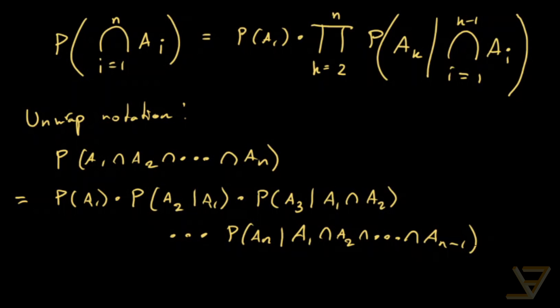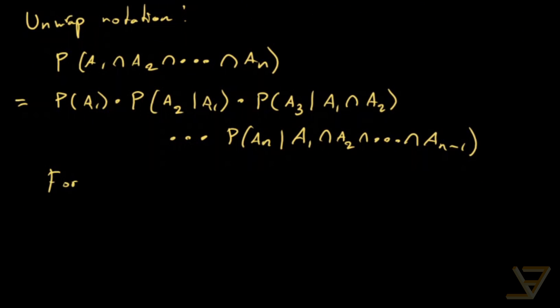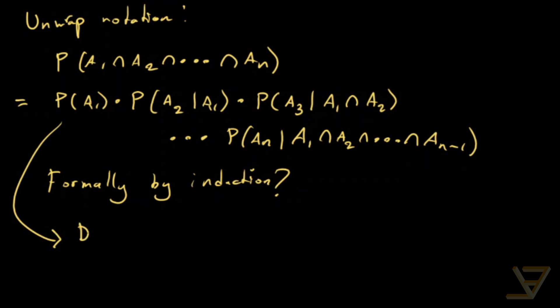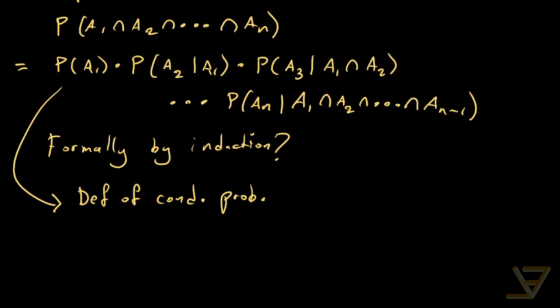We could prove this formally by induction, but there's a better way that's more intuitive and easy to conceptualize — by just using the definition of conditional probability. We're going to do that and it'll prove the chain rule. You'll be seeing a bit of a chain reaction when we use telescoping. So let's start with the complicated side.